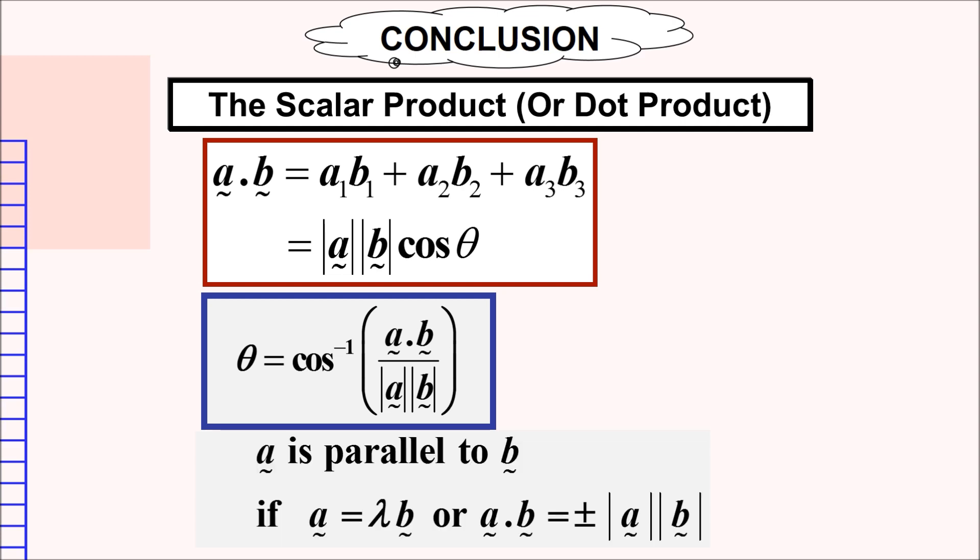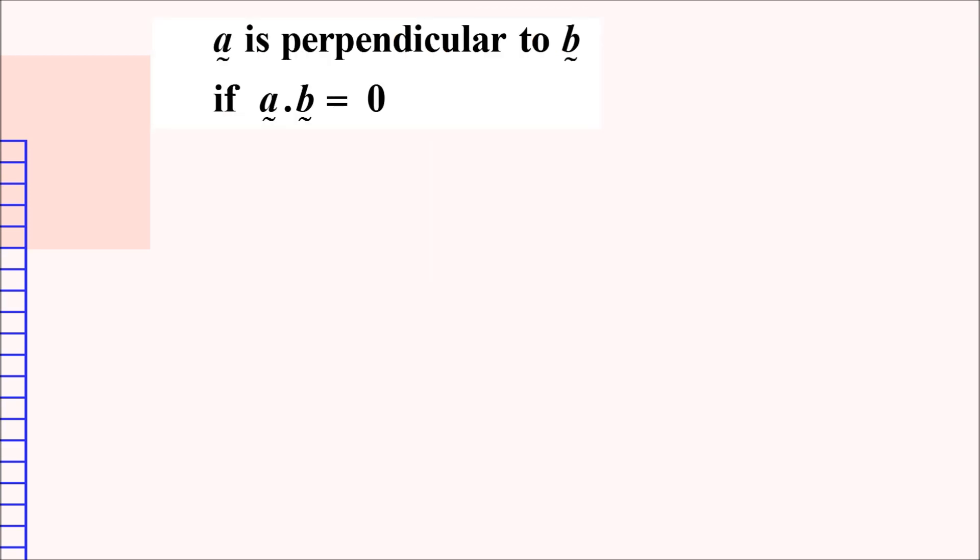The next properties that we have already learned is for the parallel between two vectors. If vector a is parallel to vector b, then we can say that a is equal to lambda b or a dot b is equal to plus minus of magnitude a times magnitude b. Next, if we have vector a is perpendicular to vector b, meaning that if we take the dot product between vector a and vector b, a dot b, it is going to be equal to 0.